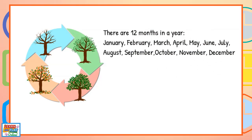There are 12 months in a year. January, February, March, April, May, June, July, August, September, October, November, December.